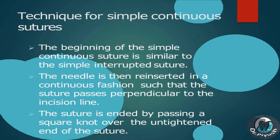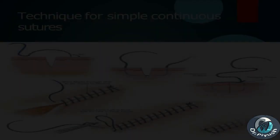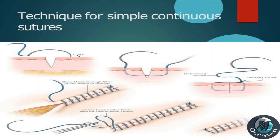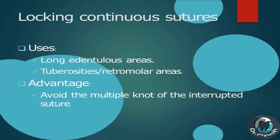Technique for simple continuous sutures: the beginning is similar to the simple interrupted suture. The needle is then reinserted in a continuous fashion such that the suture passes perpendicular to the incision line. The suture is ended by passing a square knot over the untightened end of the suture. Locking continuous sutures — Uses: long edentulous areas, tuberosities, retromolar areas. Advantage: avoids the multiple knots of the interrupted suture.